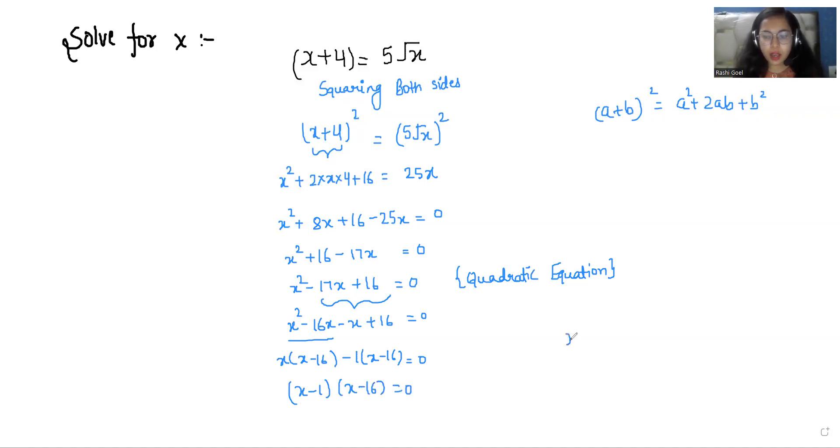So from the first I will get x - 1 equals 0, the value of x is 1, and from the second I will get x - 16 equals 0, the value of x is 16. So we have two values of x for this expression. That is x = 1 and x = 16.